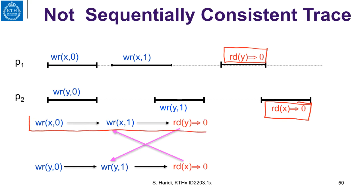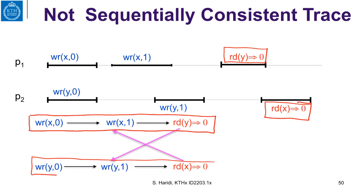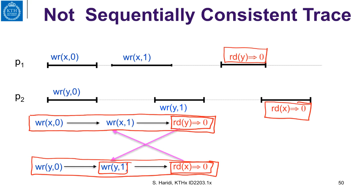We have to obey process order, so these are the operations on the first process, obeying program order — each process executes operations sequentially. But this operation reads Y as 0, so it must be placed before the write of Y to 1. Similarly, this operation reads X as 0, so it has to be before the write of X to 1. As we can see, we have a cycle, so we cannot order these operations in a single sequential order.